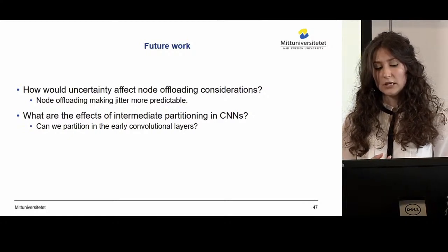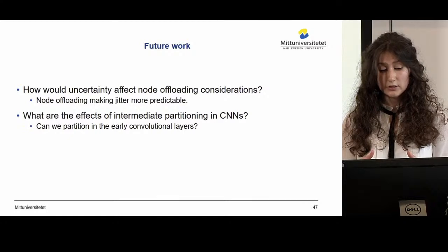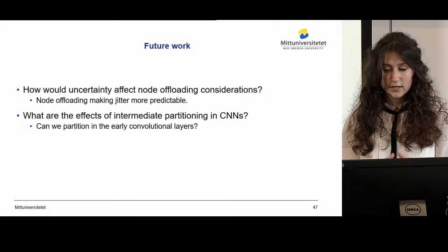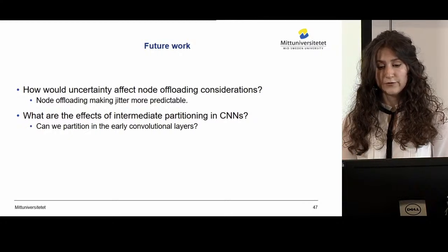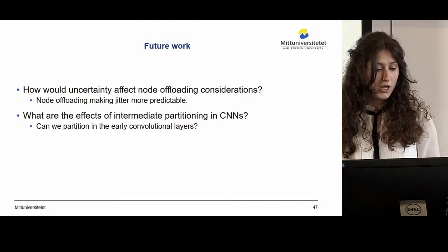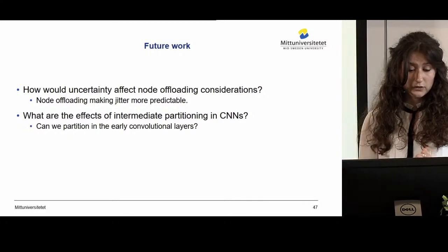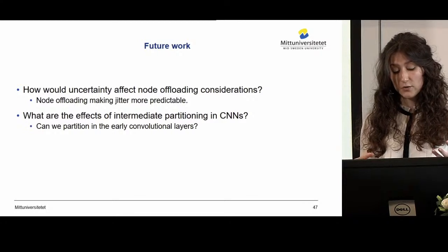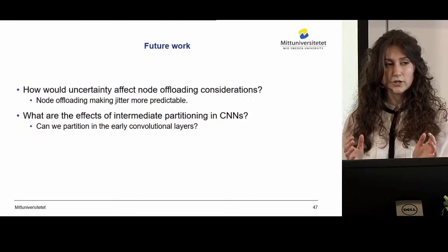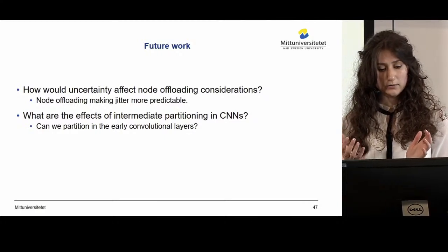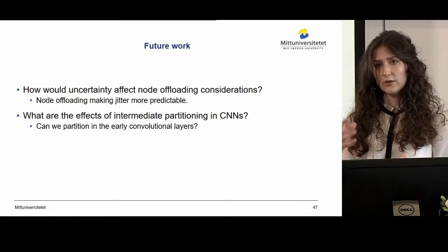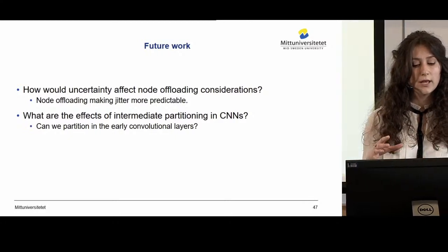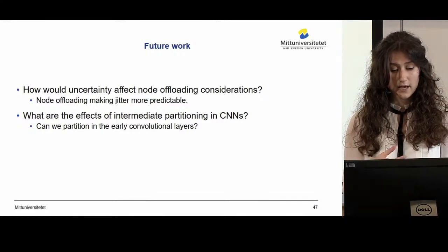Of course, there are many more questions that arise and would be interesting to address further. One example would be the inclusion of uncertainty in this model — more specifically, to analyze how jitter, mainly in communication, would affect these partitions and defining the most efficient point. Another point of interest would be investigating further the effects of intermediate partitioning in a CNN, since the early convolutional layers are quite heavy in computational load, and it would be interesting to investigate whether partitioning within CNNs is possible and how to model it.